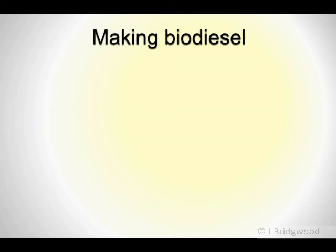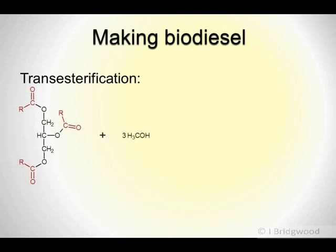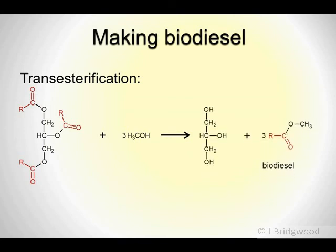Making biodiesel is a process known as transesterification. It's a very similar process to saponification, except in this case what we do is replace the alcohol part of the ester with another alcohol. We're going to make biodiesel, which is essentially a methyl ester. You take methanol, and again you will need sodium hydroxide. You tend to get a mixture of products, but what we're looking for is to produce biodiesel, which is the methyl ester.